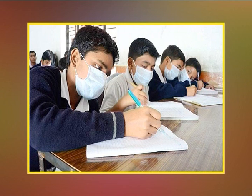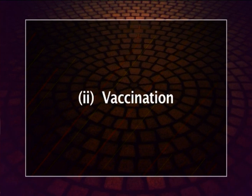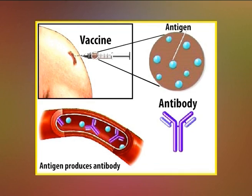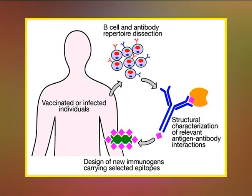Some diseases like the common cold generate only short-term immunity. Vaccination is a technique to develop immunity without infection. Weakened or dead pathogens, or portions of a pathogen, are injected into a person to make them immune. The pathogens in a vaccine are unable to cause disease but are sufficient to stimulate antibody formation by the host immune system that recognizes the antigen.